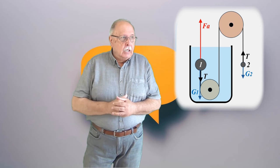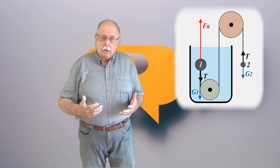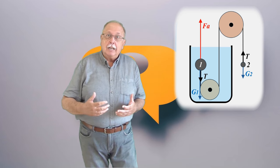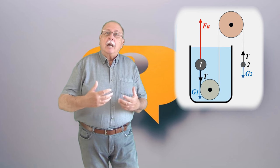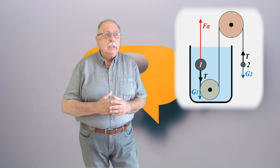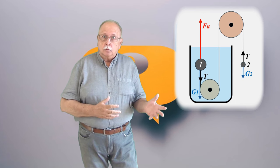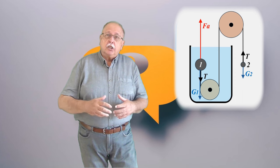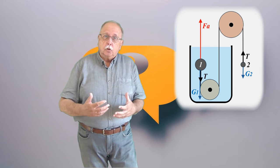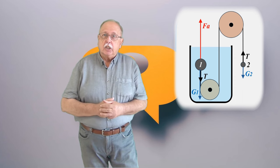3. Dacă dublăm diametrele bilelor, volumele lor cresc de 8 ori, pentru că volumul este proporțional cu raza la puterea a 3-a. Dacă ne gândim la bila 1, această creștere de 8 ori a volumului înseamnă că și greutatea ei crește de 8 ori și forța arhimedică crește de 8 ori.